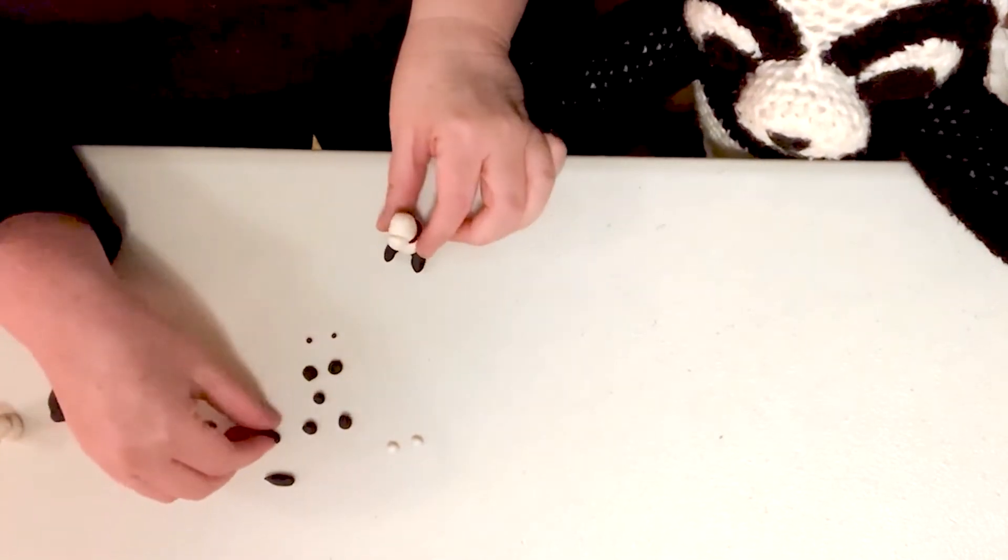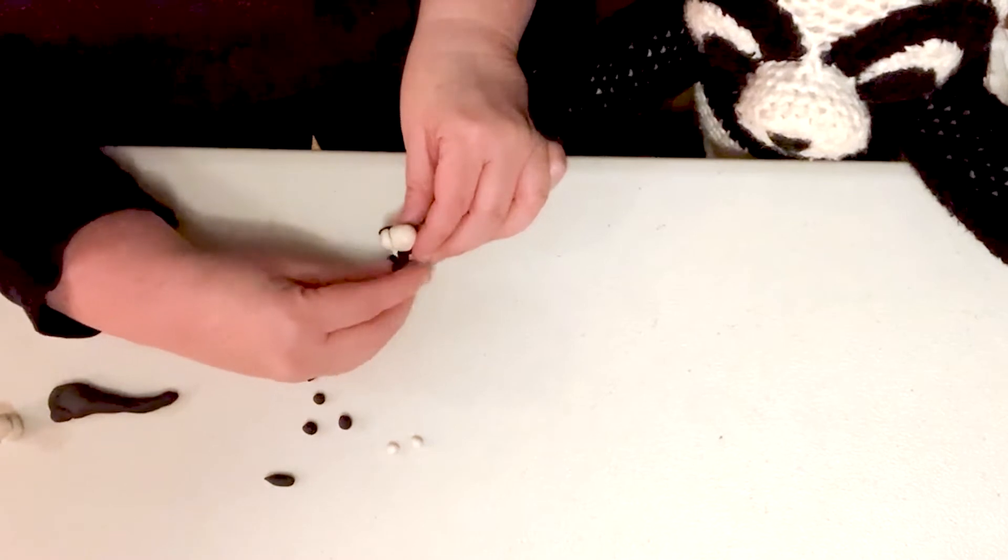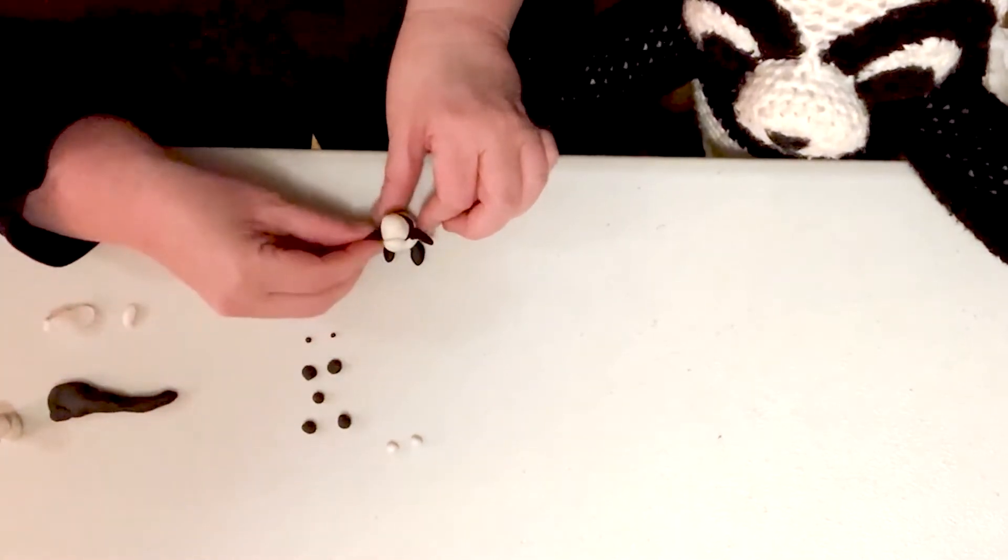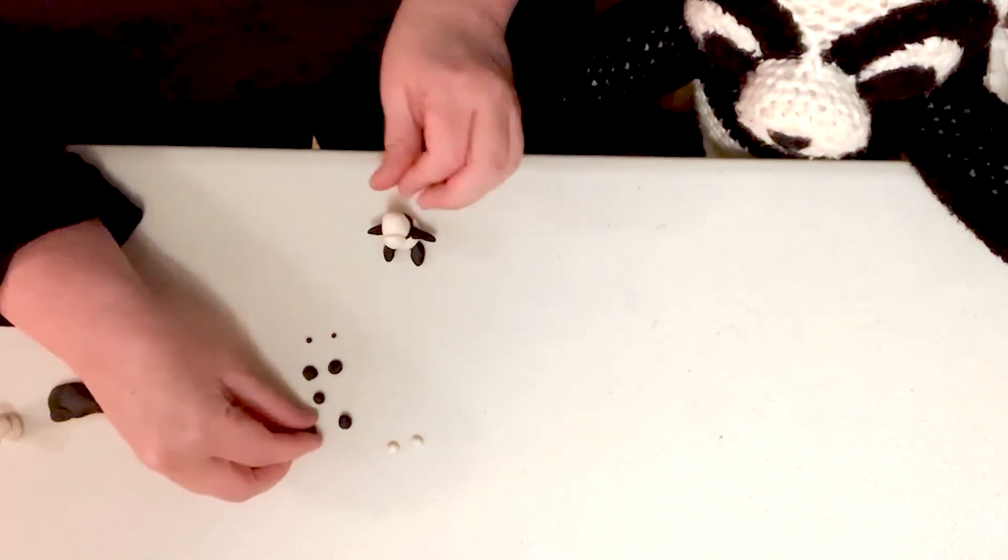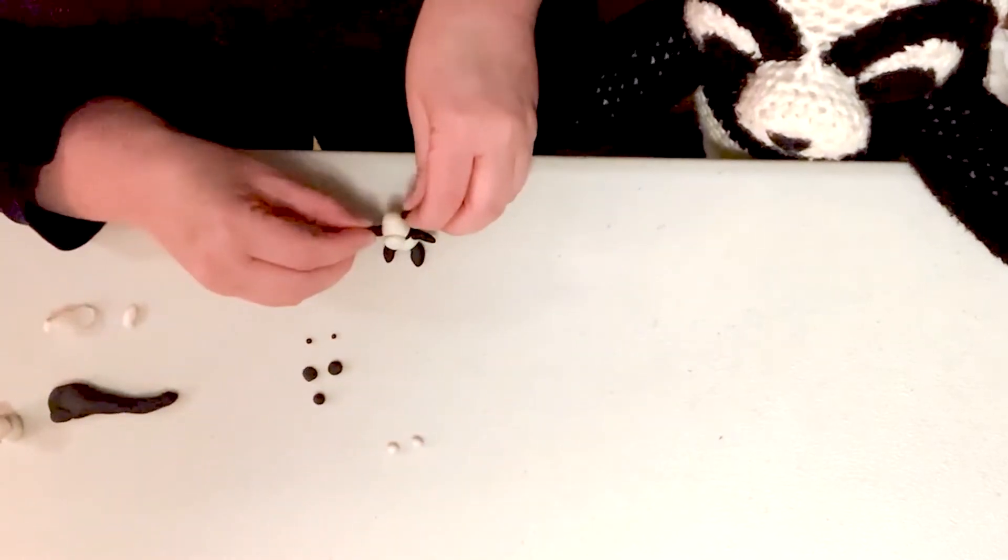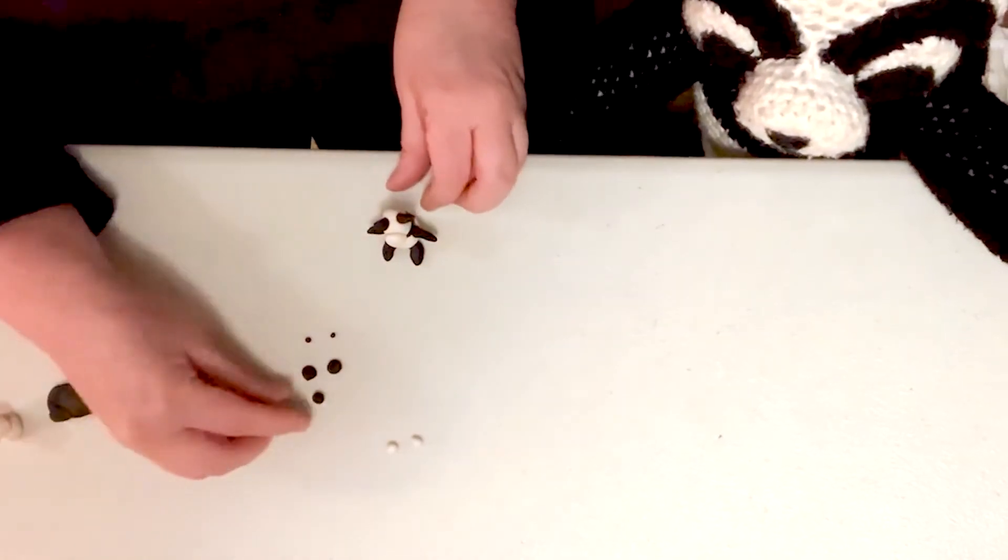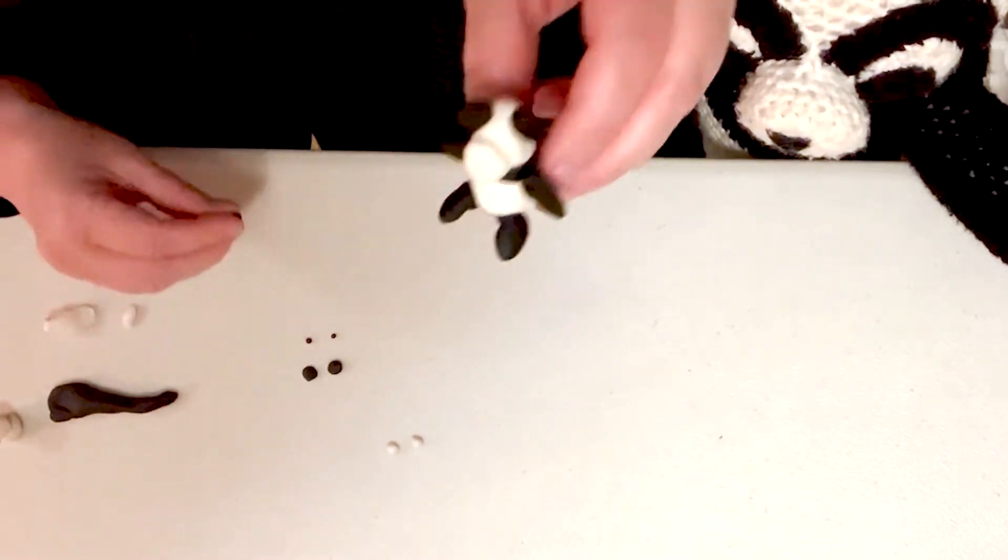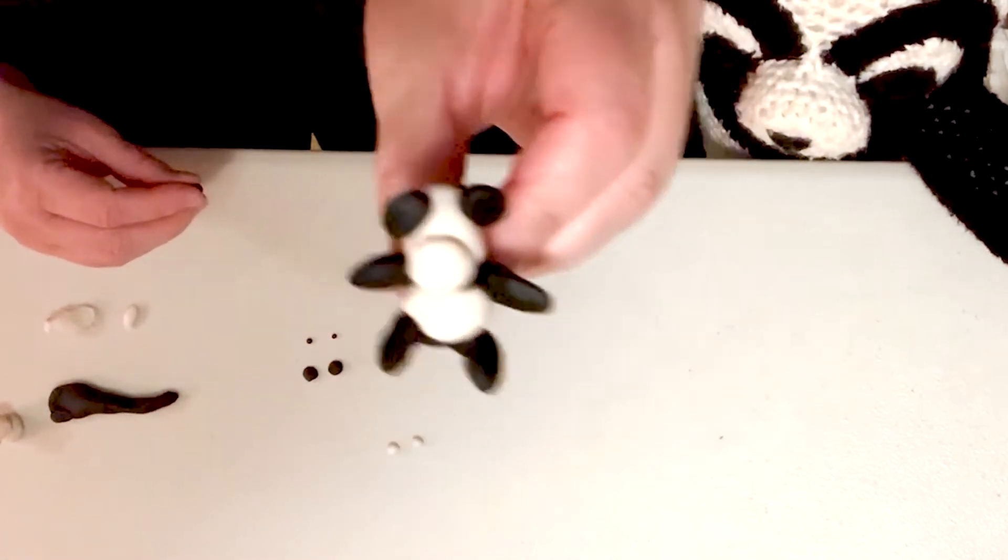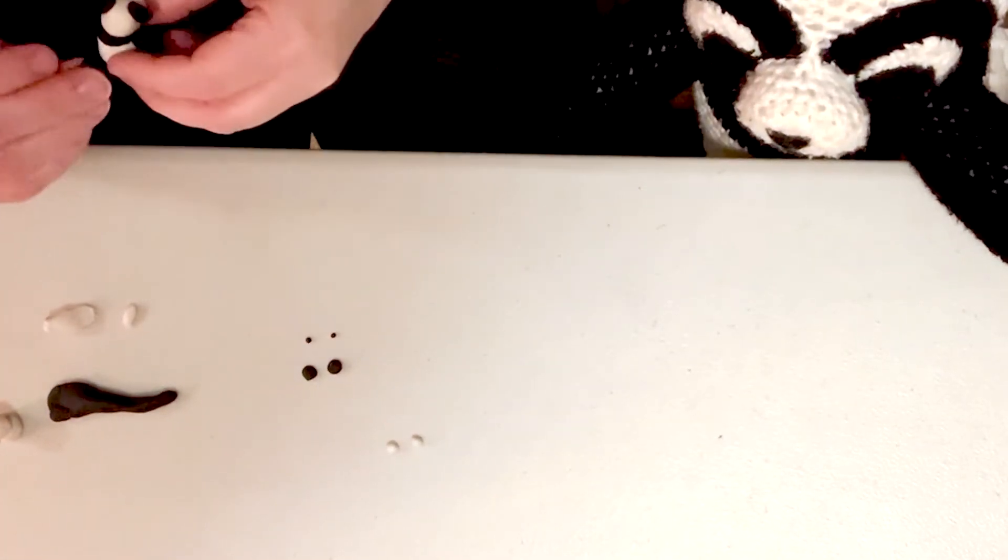And then we have two arms. Put those in. And two ears. And a tail. So we have two ears, and then we're going to put a tail in the back.